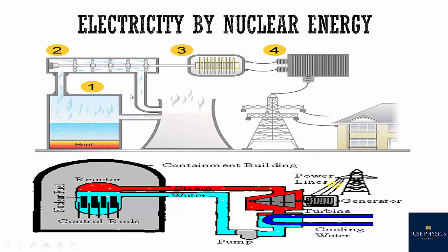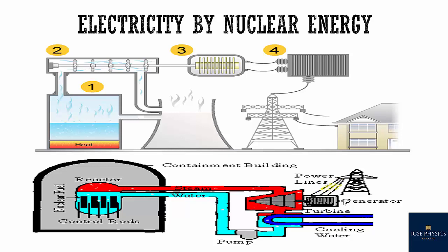Electricity can be obtained from nuclear energy by four main processes. First, it goes to the nuclear reactor. Then there is a heat exchanger system. Then it goes to the turbine and then to the generator, and this is how electricity is produced. Most importantly, electricity is produced by nuclear fission.